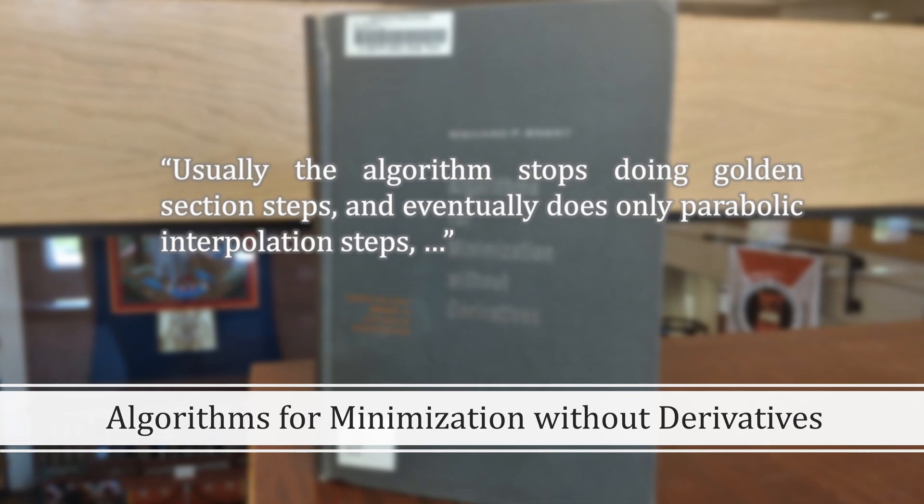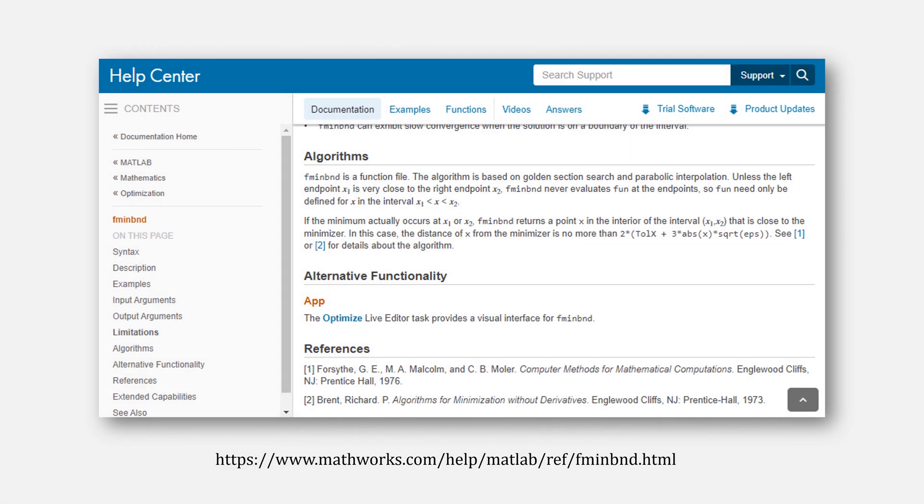Let's change gears now and look at MATLAB. Here's the documentation for the function fminbnd, an algorithm based on golden section search and parabolic interpolation. Does that sound familiar? It even cites Forsyth-Mohler and Brent. Huh? Yes, it is Brent's method.